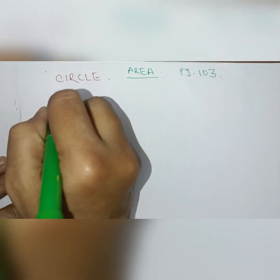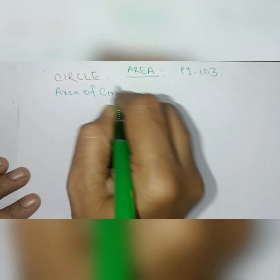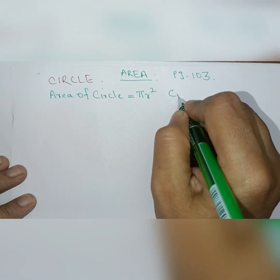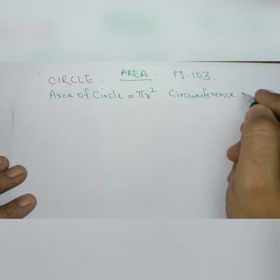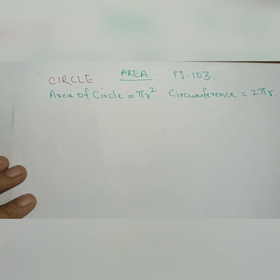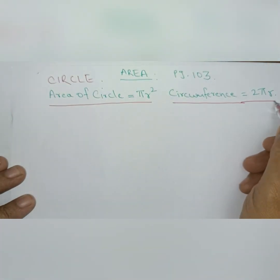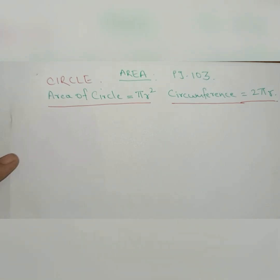So, area of a circle is equal to π r squared, and circumference of a circle is equal to 2π r. These are the two formulas we will need. We will first solve the examples on page number 103.